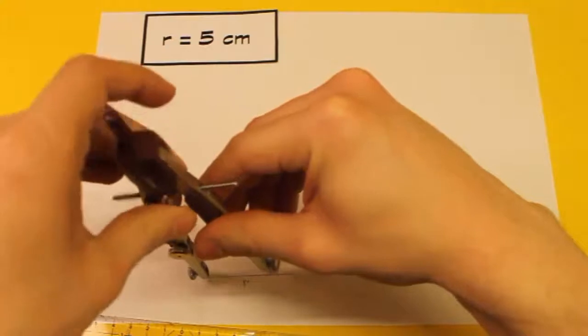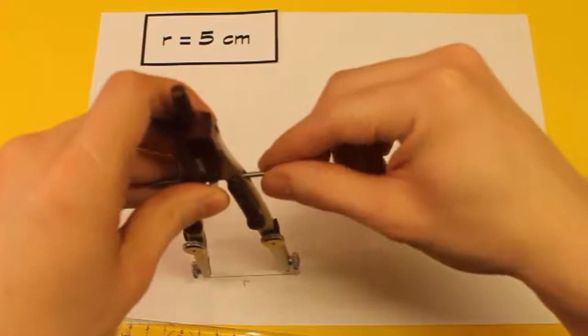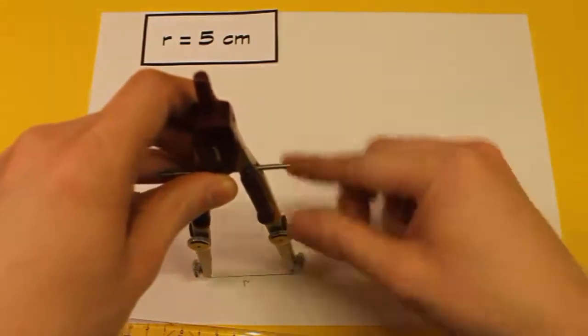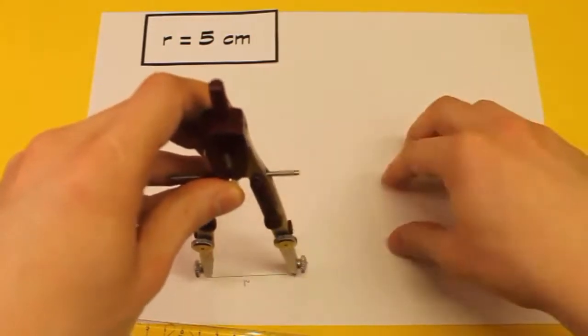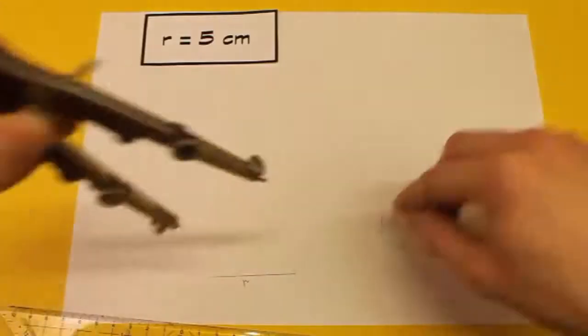Das kann etwas dauern, also ihr müsst hier ein bisschen rumstellen beim Rad, wenn ihr kleine Abstände machen wollt, oder sonst bei den zwei Klemmen, wenn ihr große Abstände machen wollt. Das macht auch gar nichts, wenn das ein bisschen dauert. Lasst euch da ruhig Zeit, denn es ist wichtig, dass es sehr genau ist. Schlägt am besten immer mit der Mine am Papier etwas ab, um zu sehen, ob die Zirkelmine auch wirklich den Endpunkt trifft.